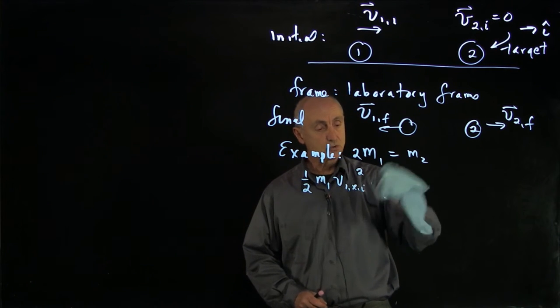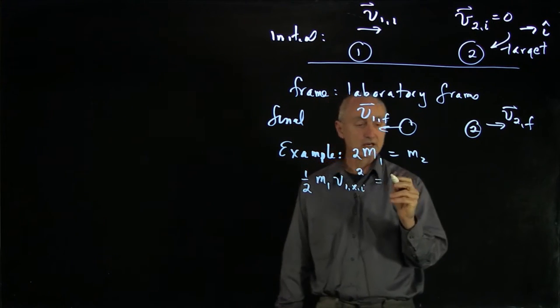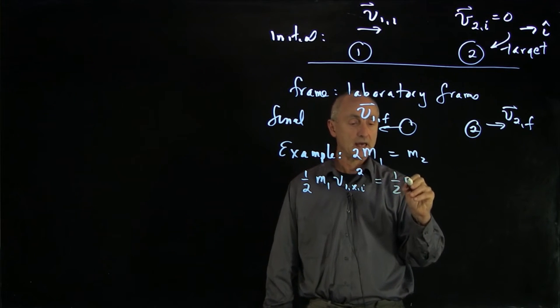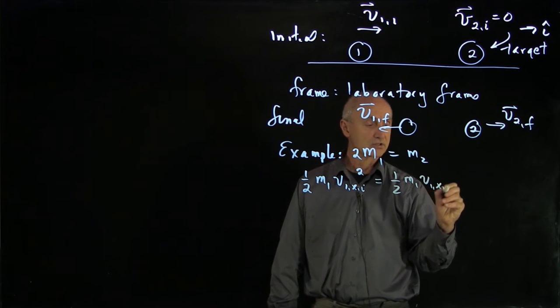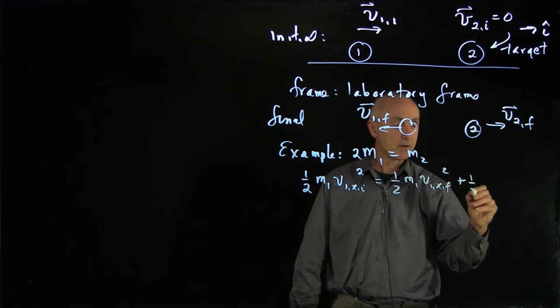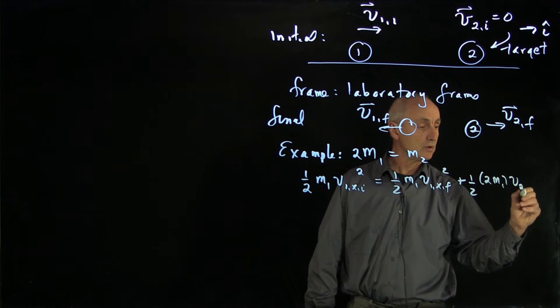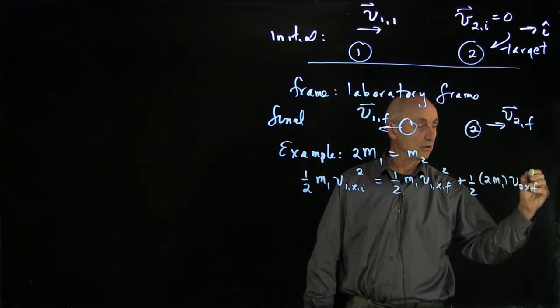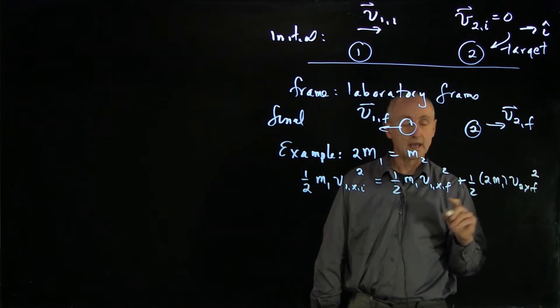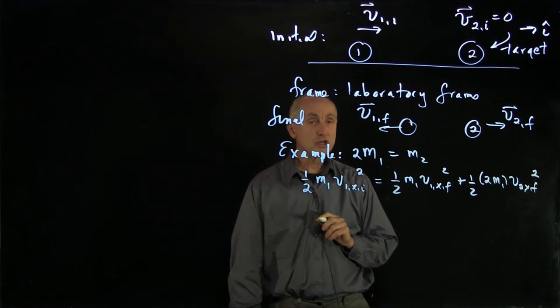Our initial kinetic energy is just equal to the final kinetic energy, 1/2 m1 v1x final squared. Now I'm going to substitute in 2m1 for the mass of m2 v2x final squared. That's our energy condition.